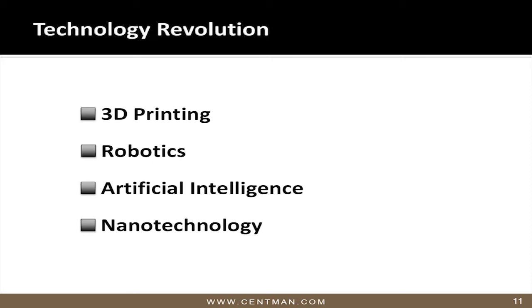Now let's talk about manufacturing, because this is where the big breakthrough is coming. We are going to eventually become — and are becoming — the low-cost producer in manufacturing, even beating out China. The technological revolution in manufacturing is driven by 3D printing, robotics, artificial intelligence, and nanotechnology. There are so many things these technologies combined can do that it really stretches the imagination, but I'm going to give you a couple of examples.